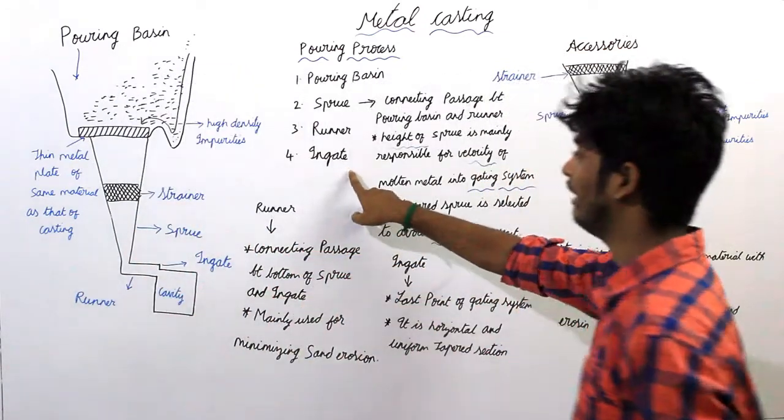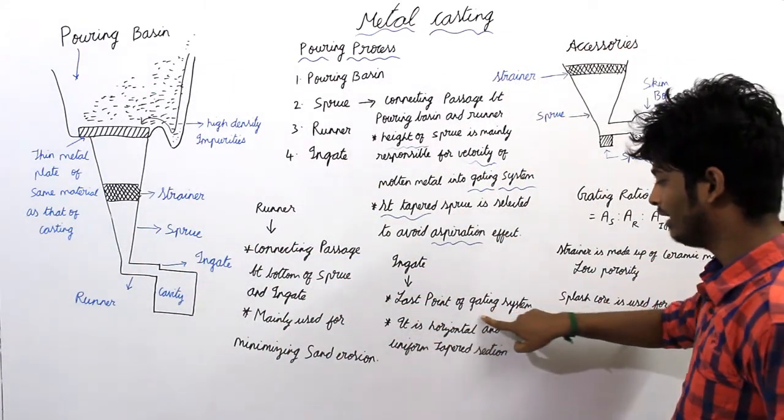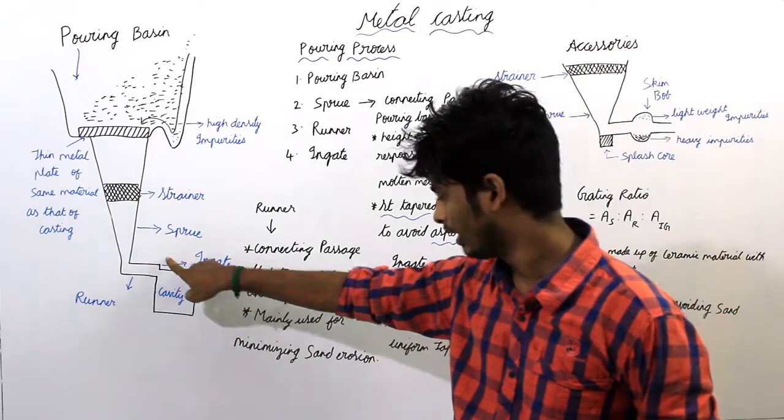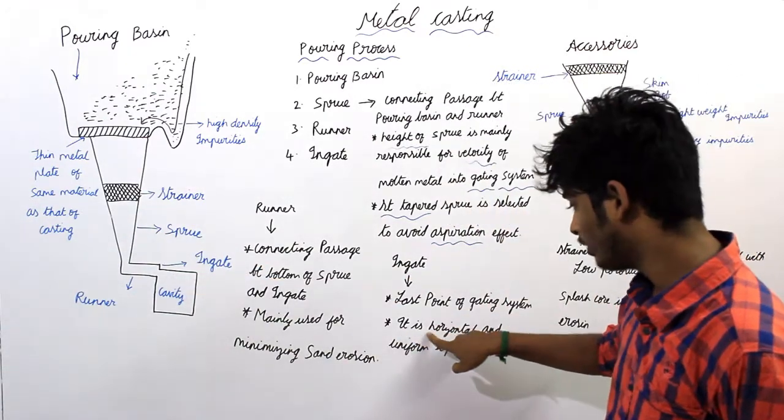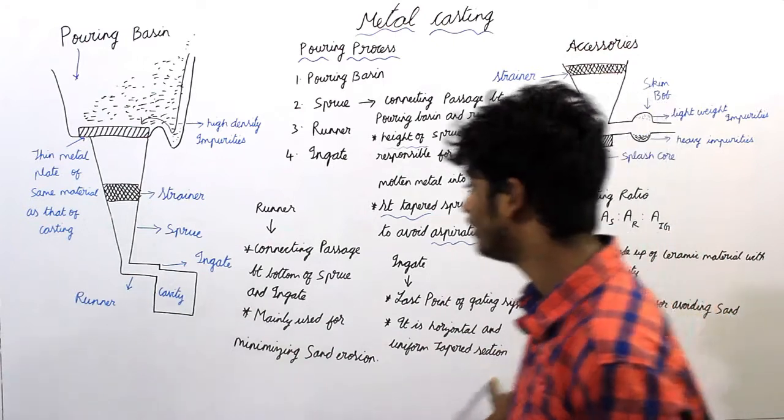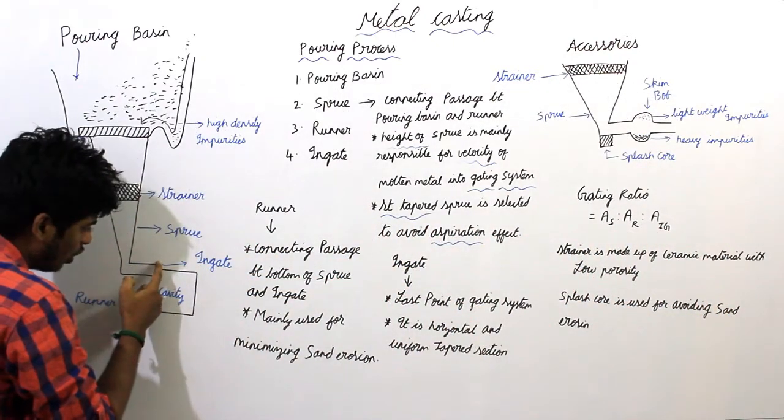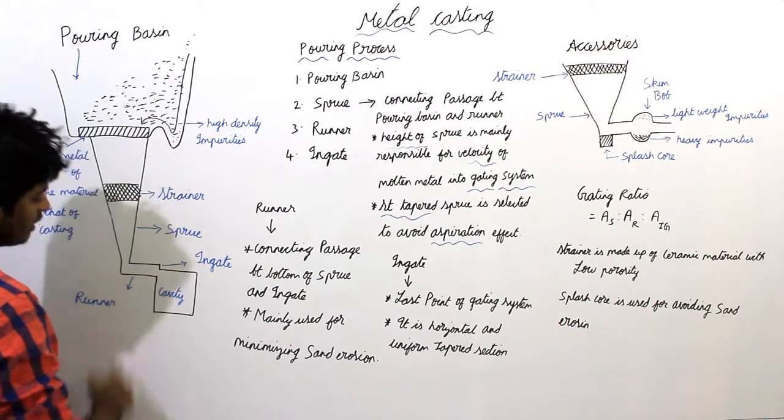And fourth element is ingate. The last part of gating system is ingate. It is horizontal and uniform temple section.